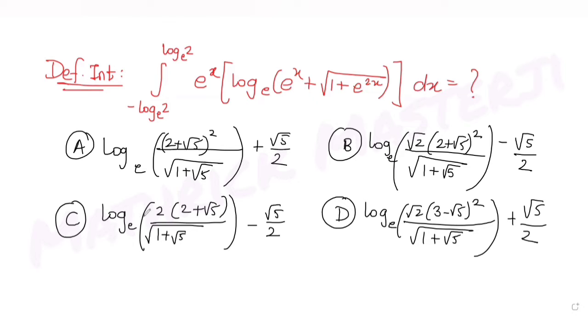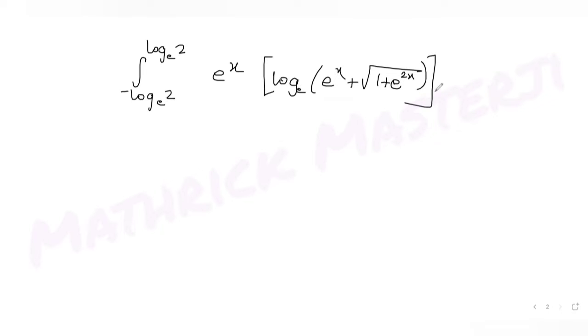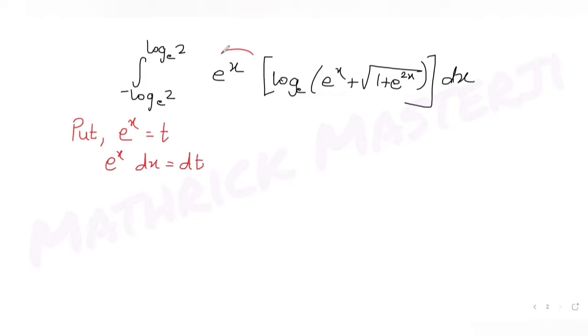Let's write the integral: from −log 2 (base e) to +log 2 (base e) of e^x · log(e^x + √(1 + e^(2x))) base e dx. I'll substitute e^x = t, so e^x dx = dt. This means wherever I see e^x and dx, I replace them with t and dt respectively.